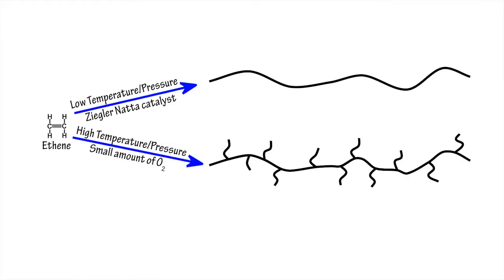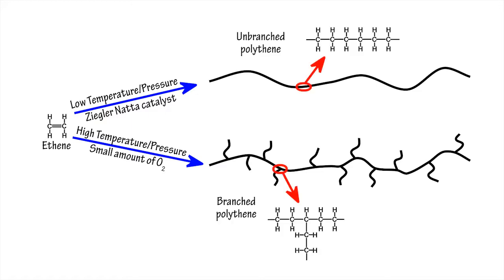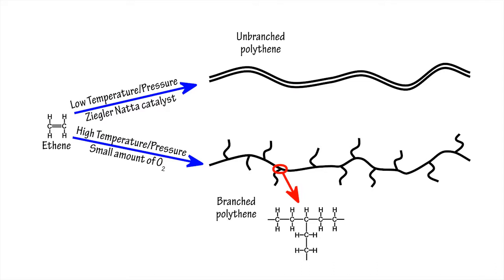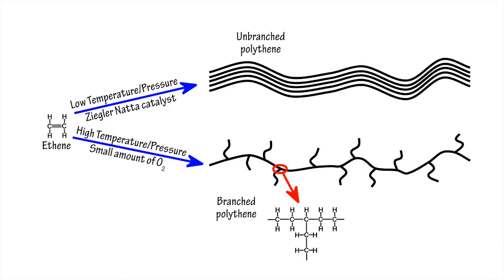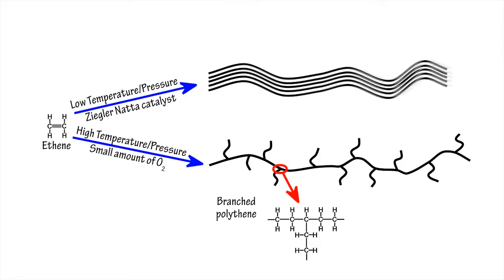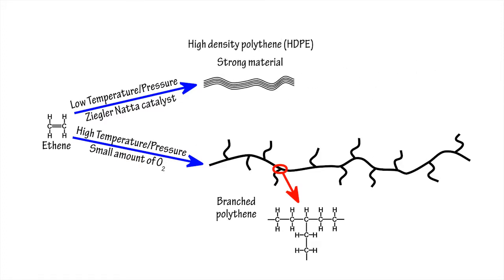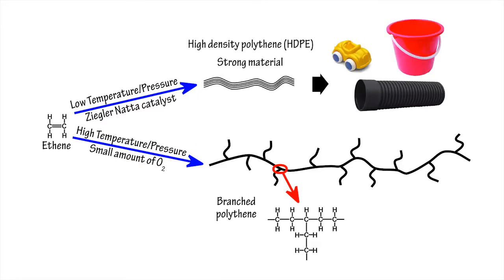Depending upon the process used to produce polythene, the strands of polythene can be unbranched or branched. The unbranched strands pack closely together in crystalline formations to form high density polythene, a strong material that can be used to make objects such as plastic toys, pipes and buckets.